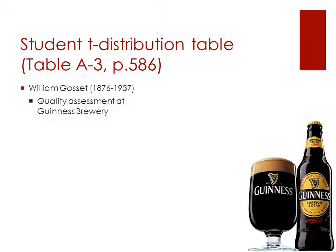At that time, Guinness Brewery had restrictions on what people could publish while they were working there, and so he published the t-distribution under the pseudonym of student. So it's called the student t-distribution table.